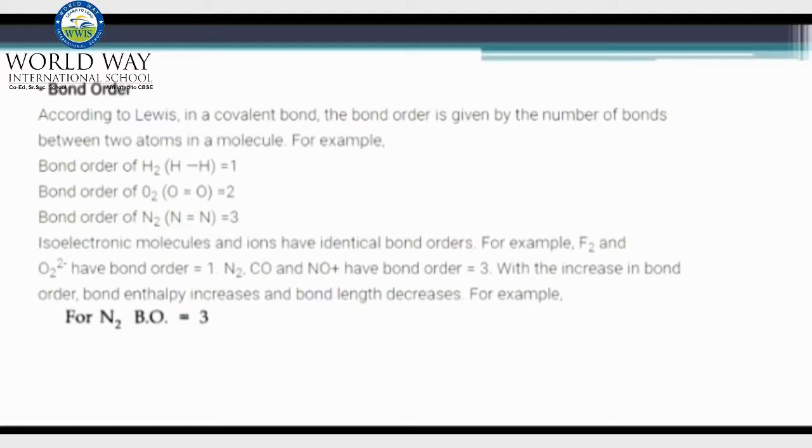So the bond order is equal to one. Likewise, for oxygen it is two and for nitrogen the bond order is three.